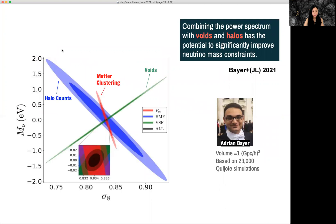And recently, we combined void statistic and the matter clustering together with halo counts to constrain neutrino mass. So this is work led by Adrian Bayer and using a Quixote simulation, not massive news.